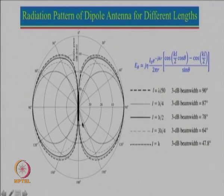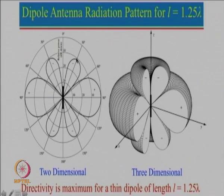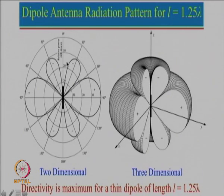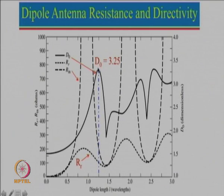In all previous cases there is only one main beam, but when the dipole length equals 1.25λ, a minor side lobe appears. Up to L = λ the pattern went from maximum to zero; now for 1.25λ a side lobe also comes in between. Since everything is symmetrical, this pattern repeats on all sides. The 2D pattern shows maximum, going to zero, then a side lobe coming in between. This case is important because at 1.25λ we get maximum directivity.